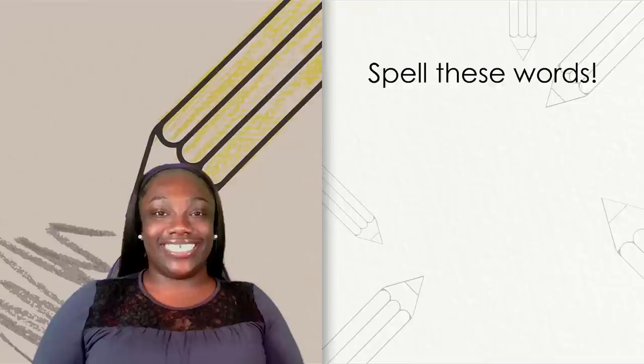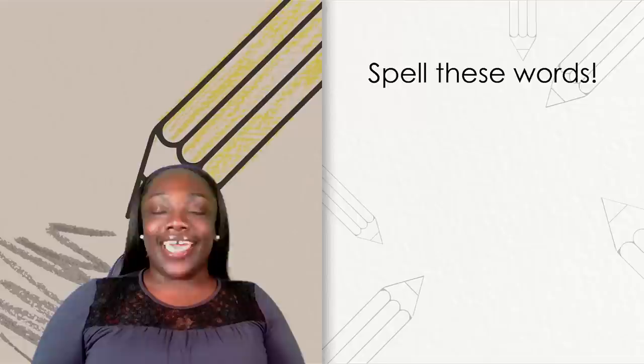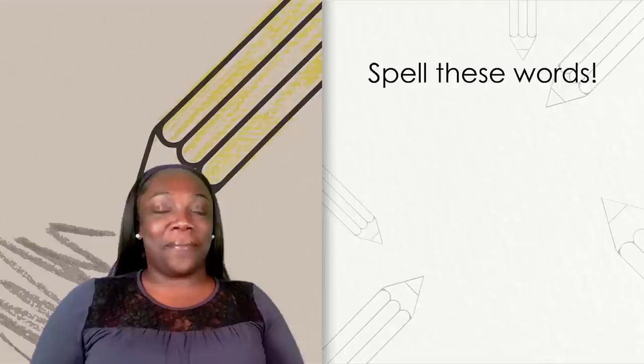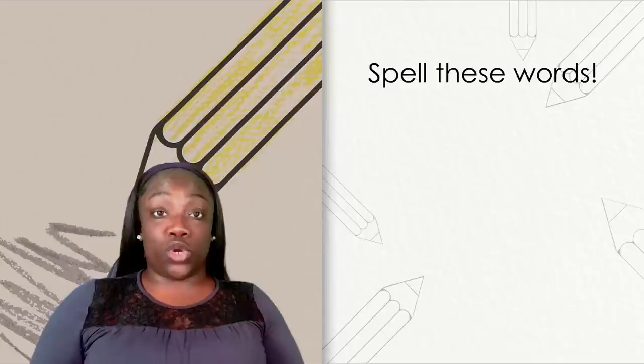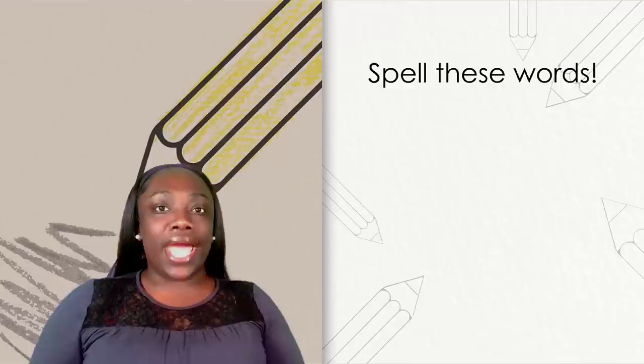Writing. Grab your pencil and paper, we are going to do a spelling review. I'll say a word and a sentence with the word in it. Then you'll write the word down the best that you can. Are you ready? The first word is red. The apple is red. Write down red. Check your work. Did you get it?